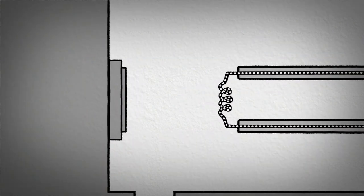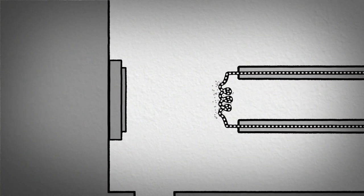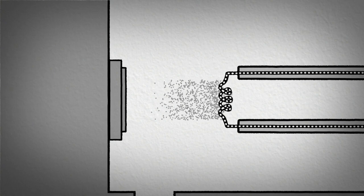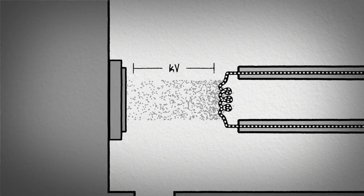When electricity is run through the filament, electrons are boiled off. The electrons are accelerated toward the anode with a strong electric field.